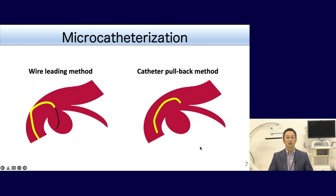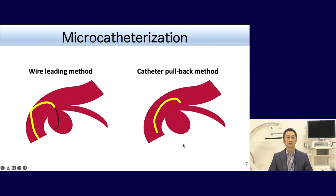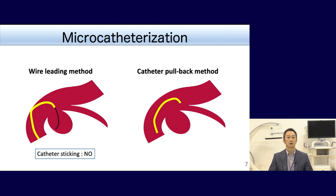As for microcatheterization, if the microcatheter can advance smoothly without any sticking in the vessel, the wire leading method is simple. But in cases with catheter sticking due to vessel tortuosity, there is a risk of the catheter jumping into the aneurysm. So the catheter pullback method is better in those cases.